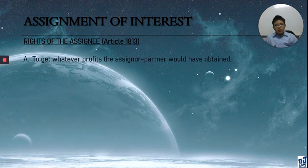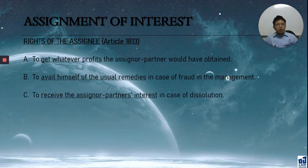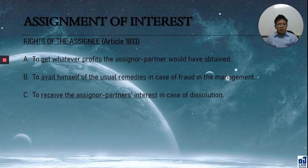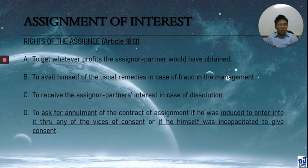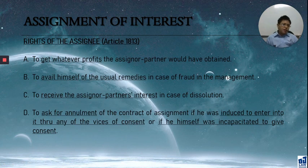However, the assignee does have rights as provided in Article 1813. The rights of the assignee are: first, to receive whatever profits the assigner would have received. Second, to avail themselves of useful remedies in case of fraud in management. Third, to receive their interest in case of dissolution — referring to the surplus after the partnership has been dissolved. Fourth, to ask for annulment if the assignee was induced to enter into the partnership because of vices of consent — such as violence, intimidation, mistake, fraud, undue influence, or incapacity.